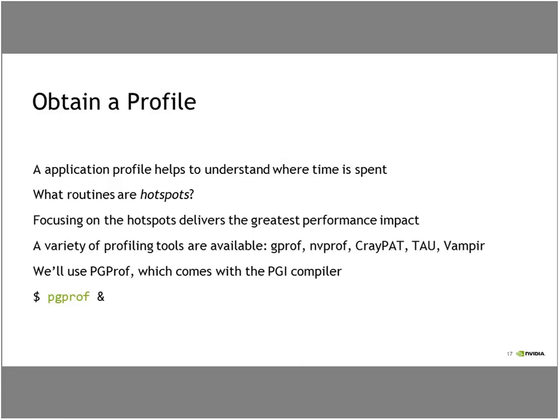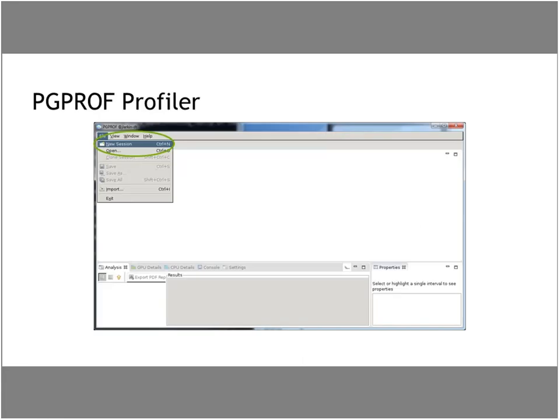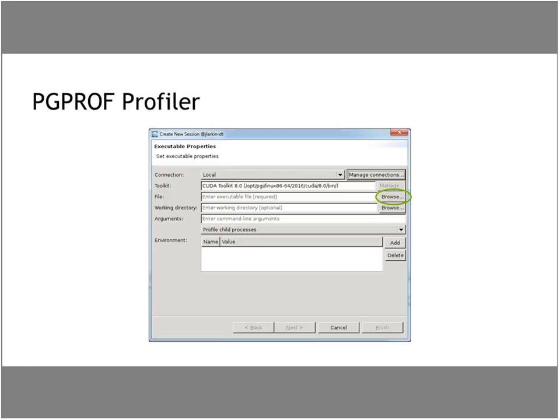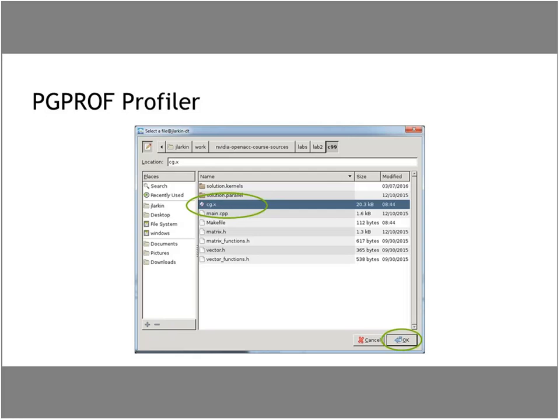The law is Amdahl's — A-M-D-A-H-L. Now I'll go through a series of screenshots of the PGPROF process. In PGPROF — which will look familiar if you've used Visual Profiler — you do File > New Session after building your executable, then tell the profiler where your executable is. In the case of this sample, which is also part of our labs, it is CG.X — you'll see that again as you do the labs.